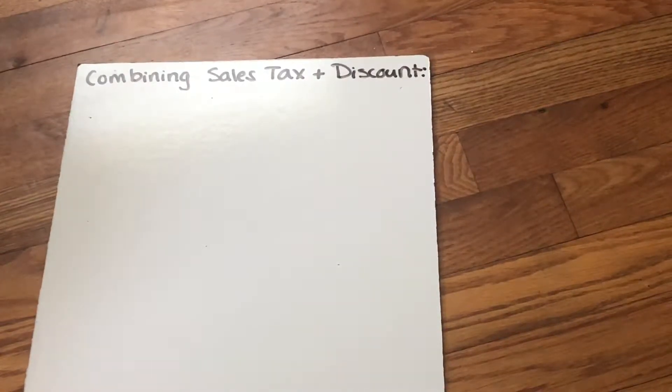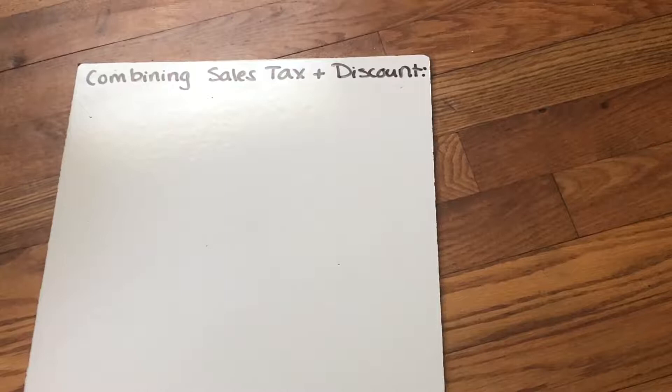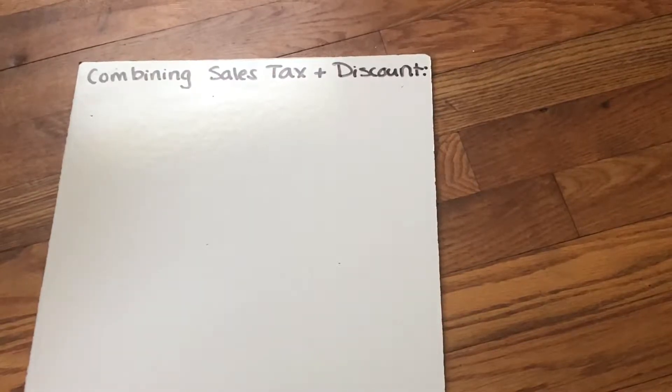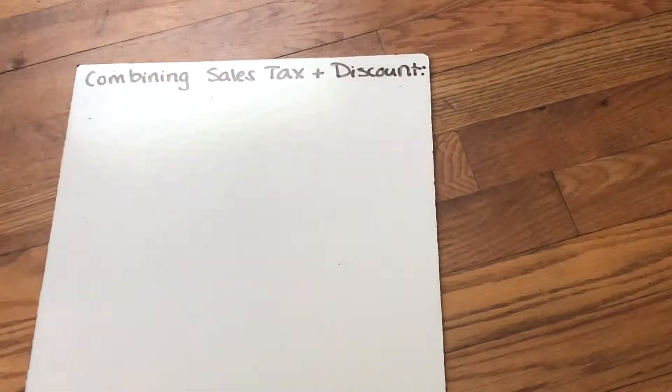All right guys, we're gonna talk about combining sales tax and discount today. Sometimes when we start combining processes, there tends to be a lot more steps, it needs a little more organization, it can feel overwhelming. So what I want to do today is really walk through this a little bit slower and have a video so that you can rewatch it as many times as you need. But I also want you to trust yourself, trust the steps that you know how to do, and just pay attention to organization, that's gonna help a whole lot.